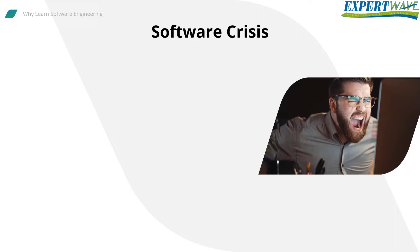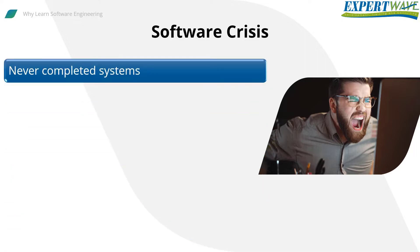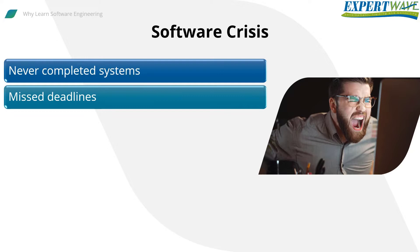The software crisis is a term that talks about the many difficulties in developing large software systems during the 1960s and 1970s. Software project failures occurred more frequently than they should have. The term 'software crisis' dates from that time, and I believe it is still valid today.